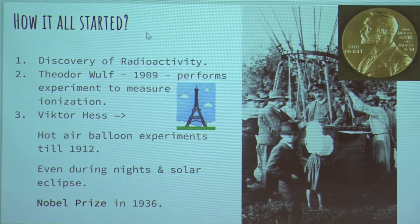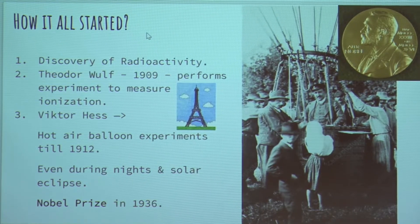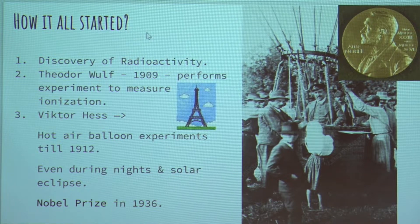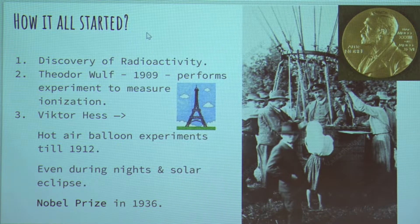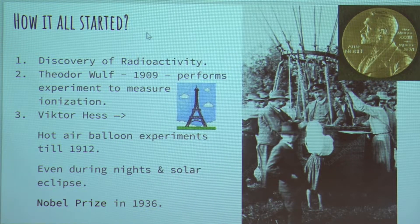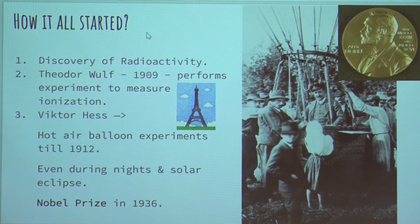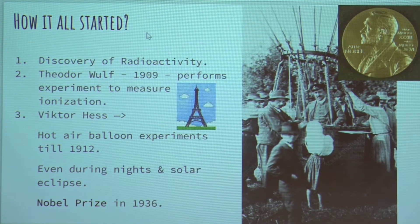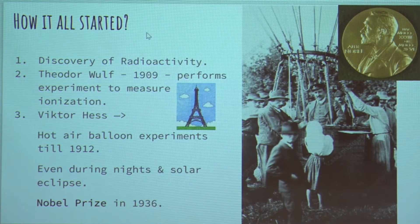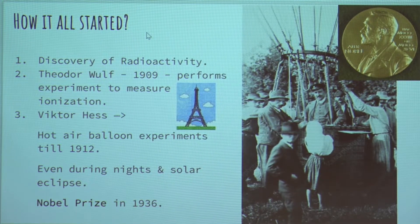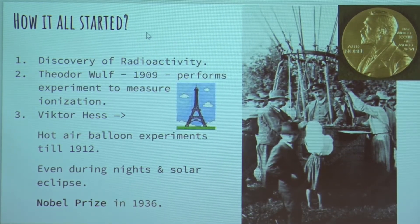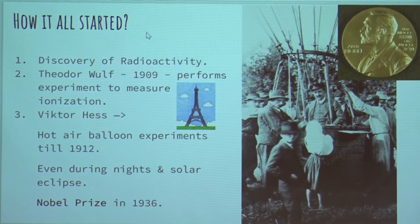So what he noticed at such height was that the ionization rate had started increasing. So to rule out that this ionization radiation was coming from the sun, he took these flights even at night, and also during the solar eclipse. But not much difference was noticed. So he concluded that this radiation is not coming from terrestrial origin, but somewhere from extraterrestrial origin. And there's the term cosmic. And he got a Nobel Prize in 1936 for this discovery.